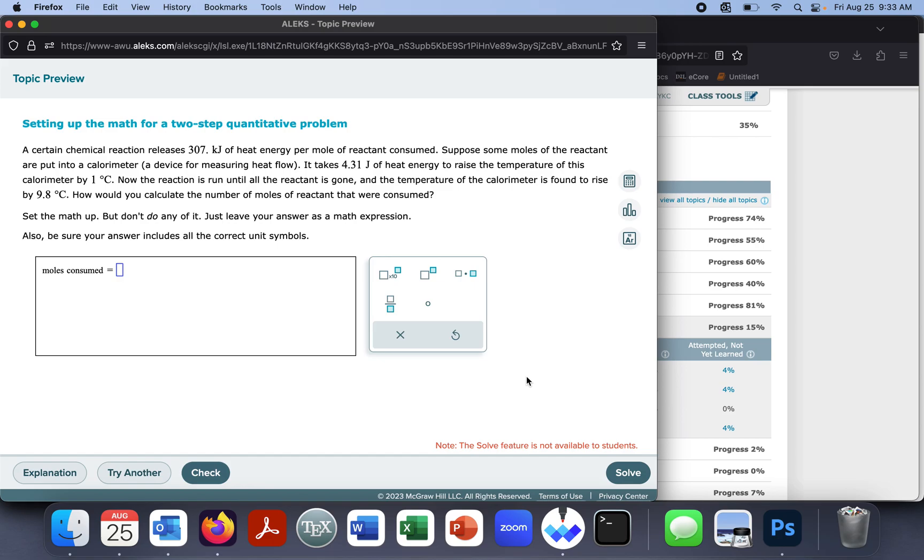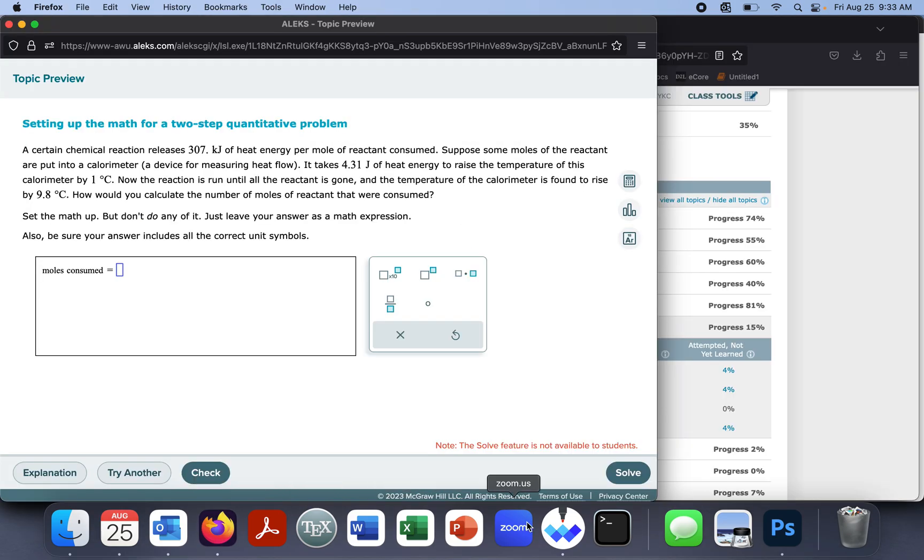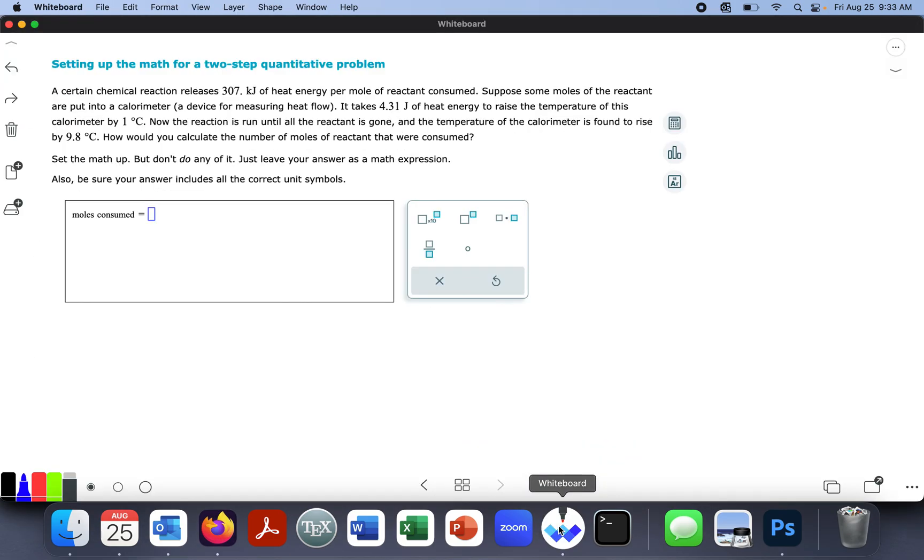So I got a question last night from a student requesting to do this Alex topic, setting up the math for a two-step quantitative problem. So what I've done is I've copied this problem and I'll put it over to my whiteboard. I'm going to go back and forth when I do this. Here's the real thing, here's the copy. This is on my whiteboard. So let's do this problem.